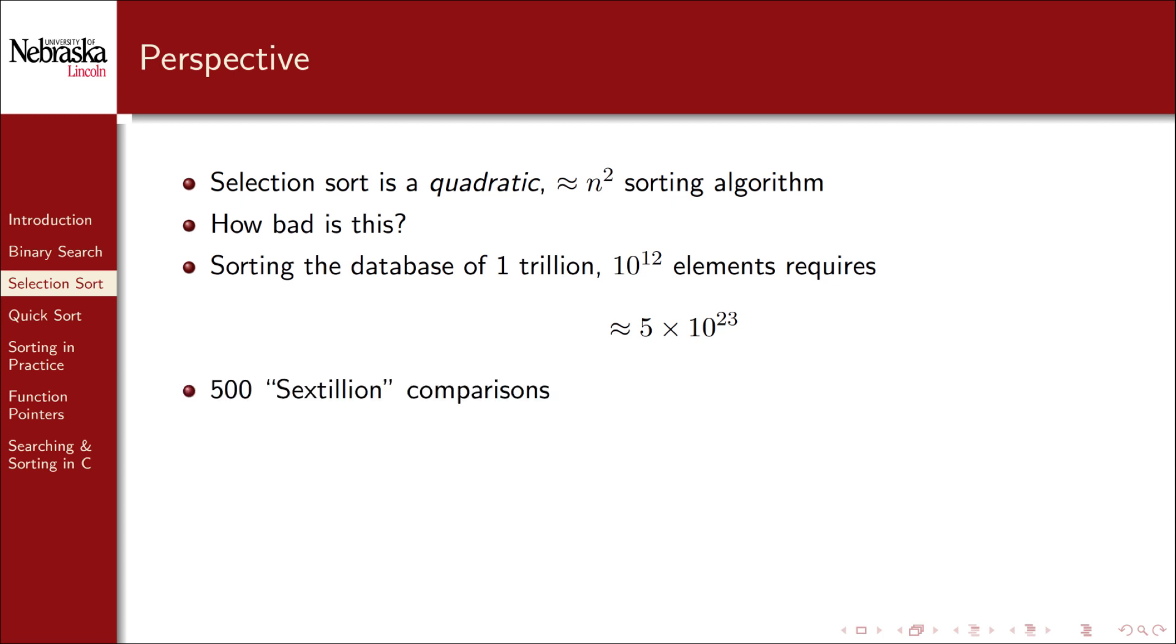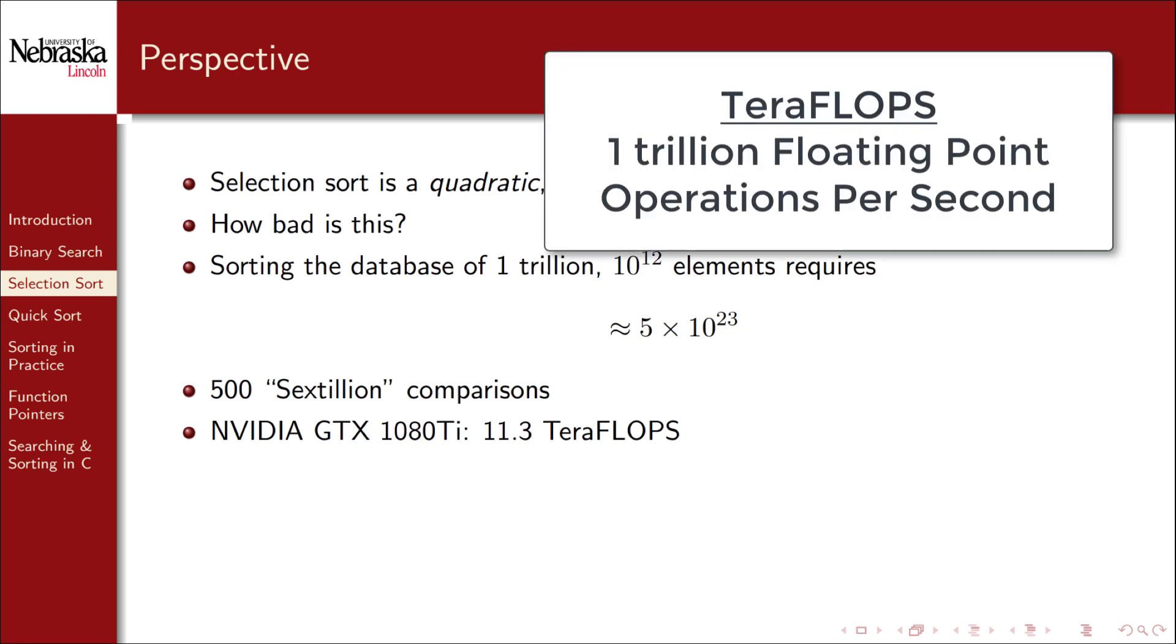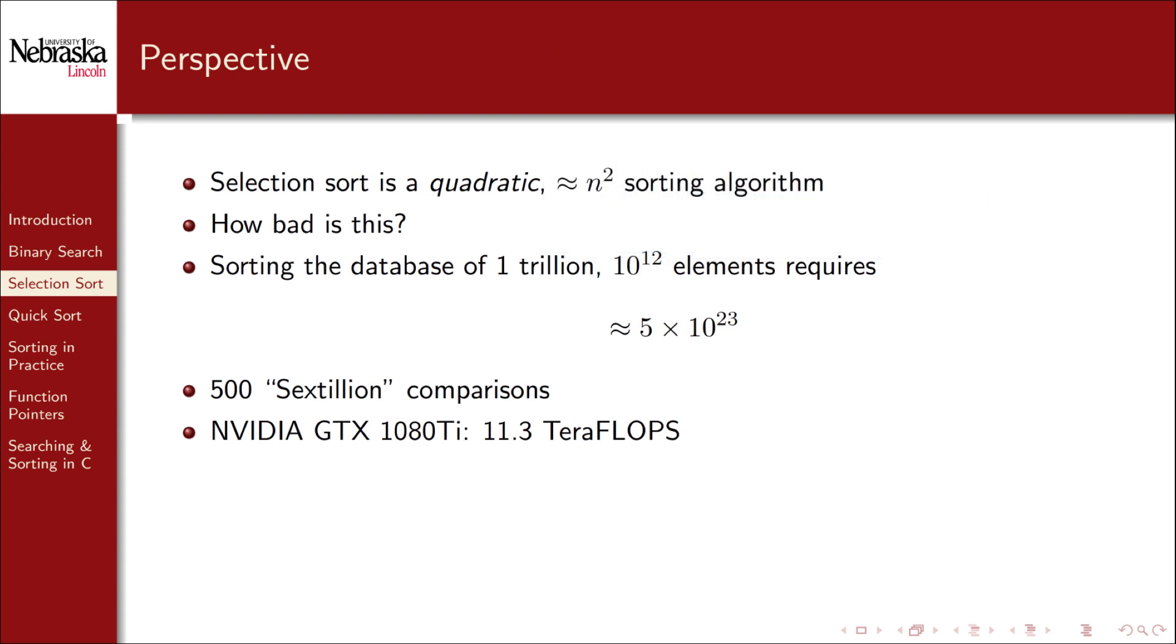This is 500 sextillion comparisons. If you're interested, for context, suppose that we run this algorithm on an NVIDIA GTX 1080Ti graphics card, which offers about 11.3 teraflops—that's 11.3 trillion floating point operations per second. Now this isn't going to be an exact comparison because a FLOP doesn't necessarily correspond to a single comparison, and we're not guaranteed to always get that kind of performance, but it will provide a rough estimate as to how long it will take to sort this database.